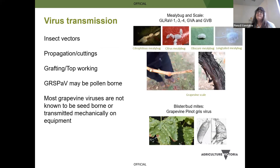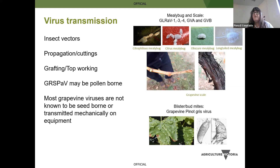Viruses are transmitted in a number of ways. Insects are an important aspect of virus ecology and how they spread in vineyards. GVA, GVB, leaf roll 1, 3 and 4 are all spread by mealybug and scale. All viruses are spread through propagation — if you take a cutting that's infected with a virus, you'll be moving it in that cutting. They transfer when you graft or top work. There is a little evidence overseas that rupestris might be pollen-borne. None of the viruses are seed-borne, which is really handy, and they're not transmitted mechanically on equipment — so the risk of transmitting a virus on your clippers from one vine to another is unlikely.